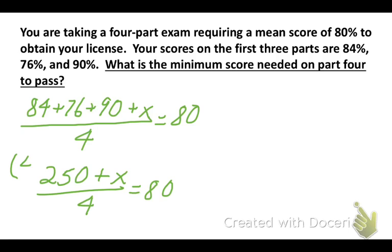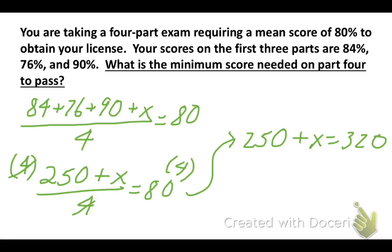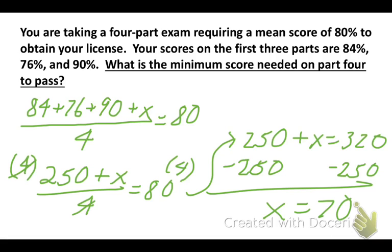So I have 250 plus x all over 4 is equal to 80. Now, I have to do the opposite of dividing by 4, and that is multiply by 4. So I end up with 250 plus x, and that equals 320. So now I can take away 250, and I need a score of 70% on the fourth part to get my license. That's one way to do this problem.